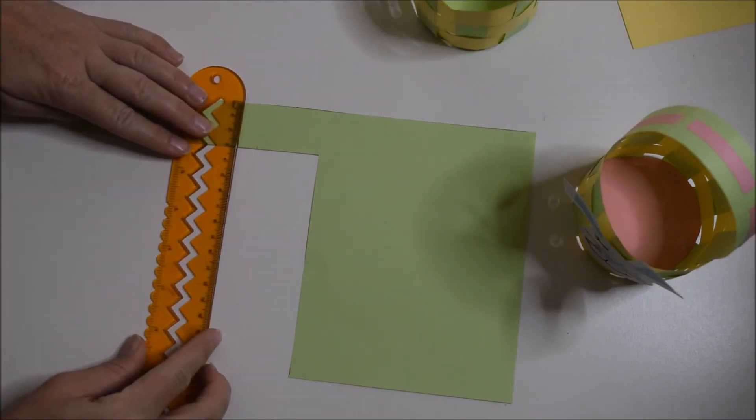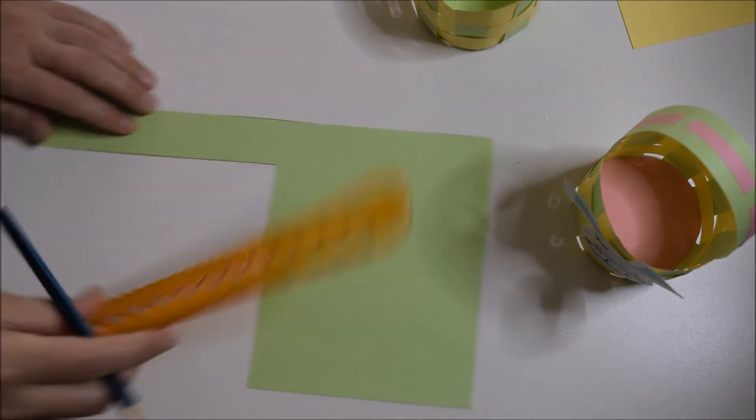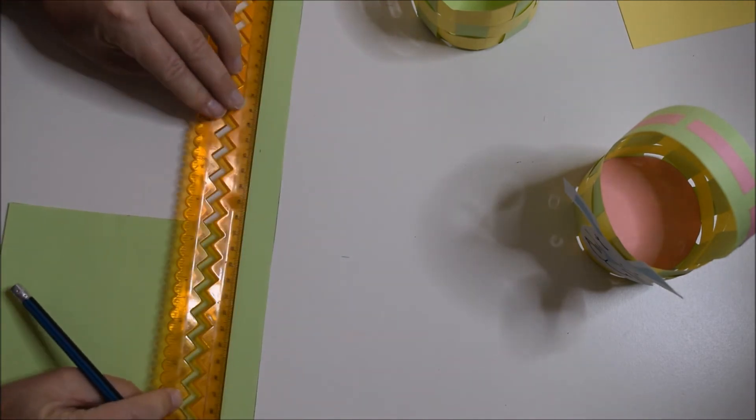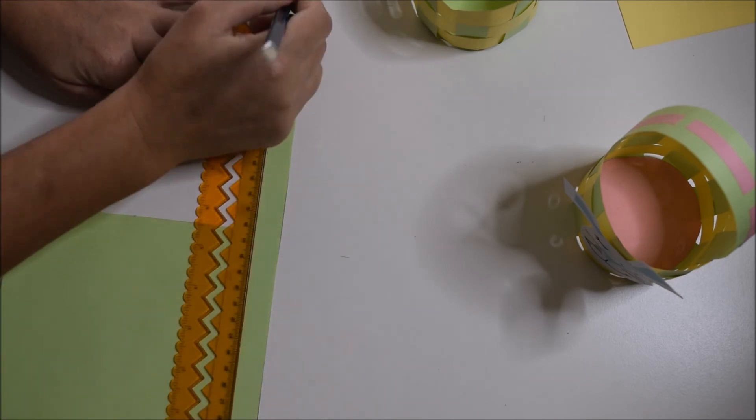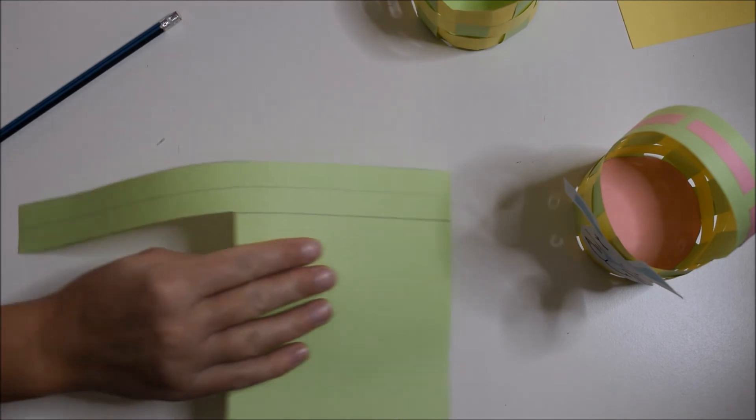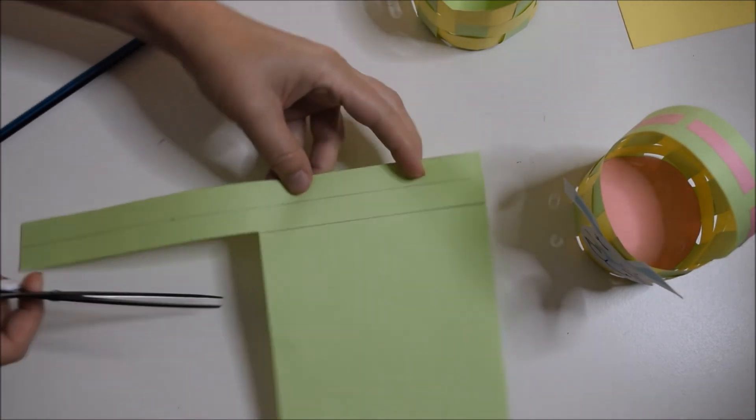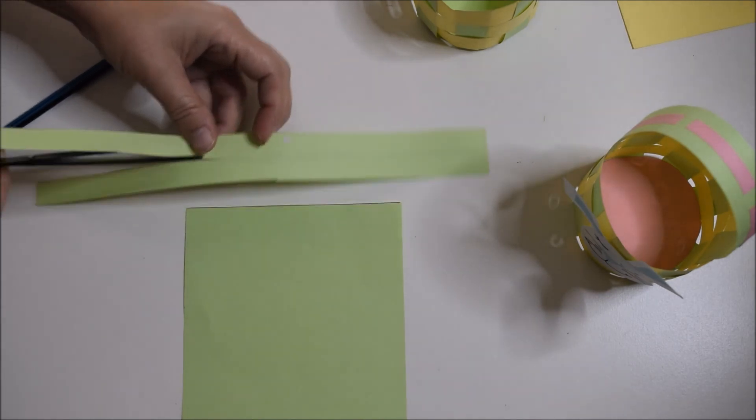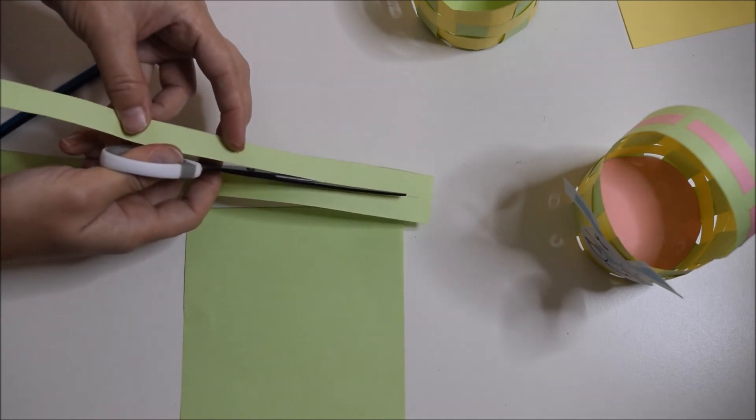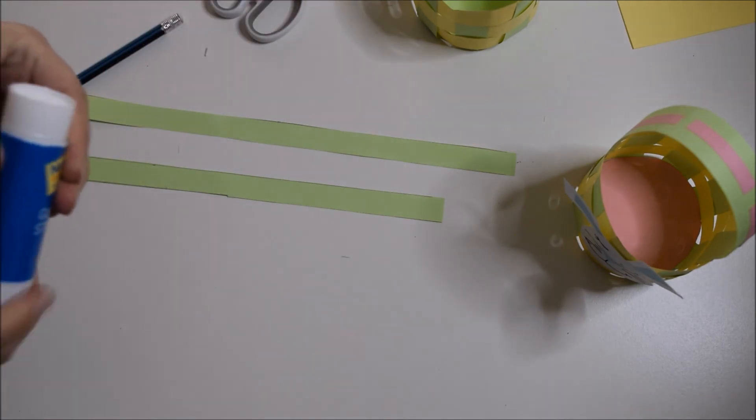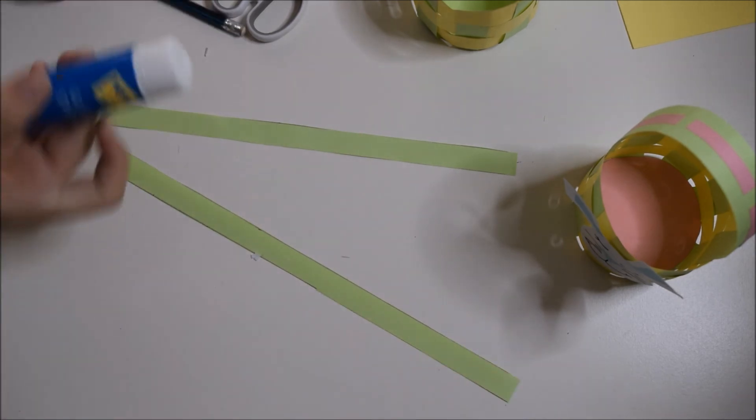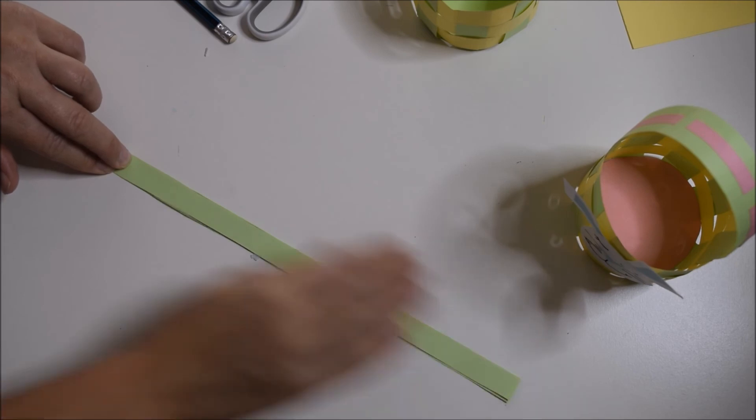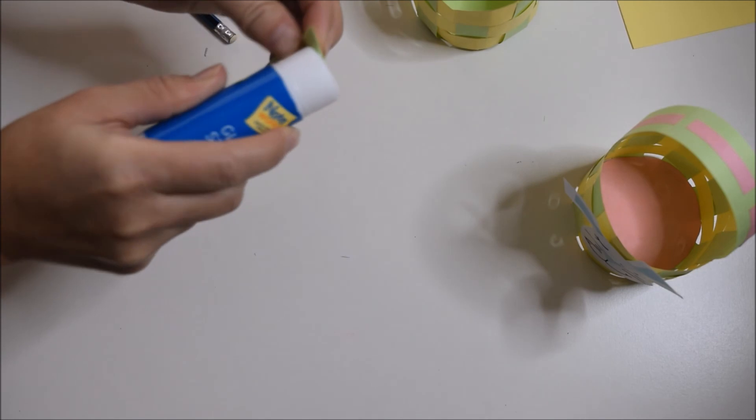Then we're going to grab our green piece again, and then we're going to do the handles for our basket. I'm going to glue those three strips together, they will then reinforce our handle. A little bit of glue on the ends.